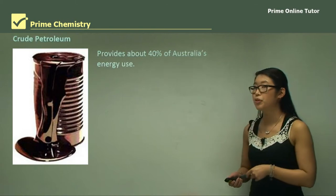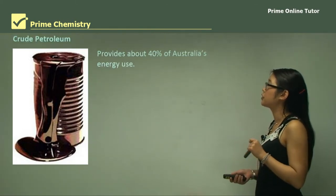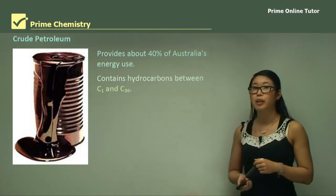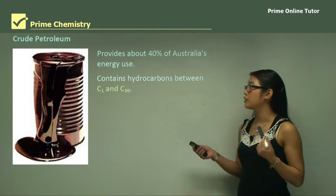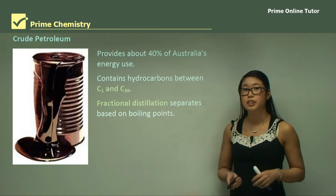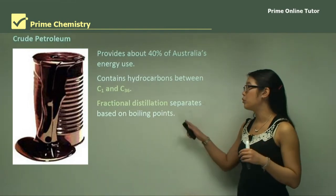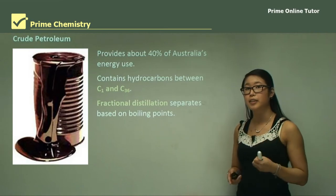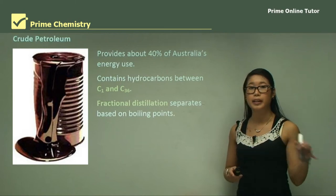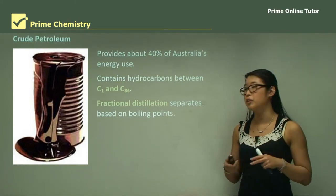Crude petroleum, which looks like a very black liquid, provides about 40% of Australia's energy use. It contains hydrocarbons between one carbon and a chain of 36 carbons. Fractional distillation is a process to separate them based on boiling points. We use different temperatures to heat it up, and whatever can evaporate at a given temperature range is taken off to yield small ranges of certain hydrocarbons.